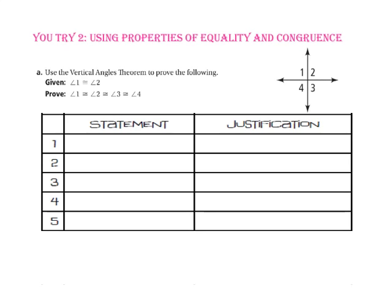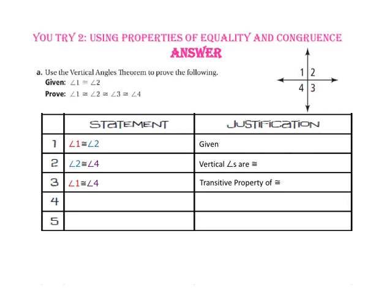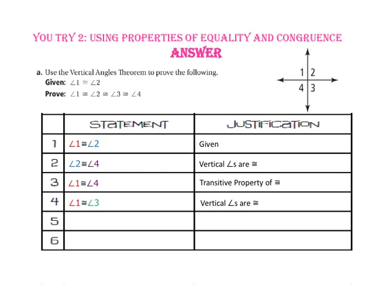Now pause the video and do you try number 2. For this proof, it is given that angle 1 and angle 2 are congruent. Angle 2 is congruent to angle 4 because they are vertical angles. Because angle 1 and angle 4 are both congruent to angle 2, they are congruent by the transitive property of congruence. Angle 1 is congruent to angle 3 because they are vertical angles. Because angle 1 is congruent to angle 2 and angle 1 is congruent to angle 3, by the transitive property of congruence, angle 2 is congruent to angle 3. Finally, by the transitive property of congruence, angle 1 is congruent to angle 2, angle 2 is congruent to angle 3, and angle 3 is congruent to angle 4.